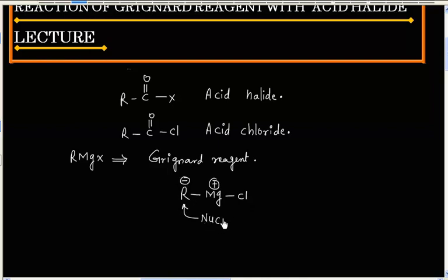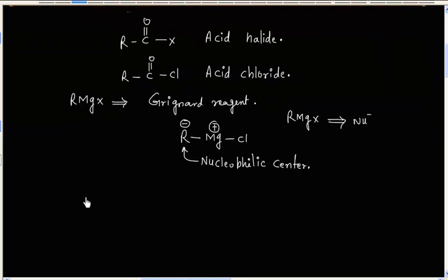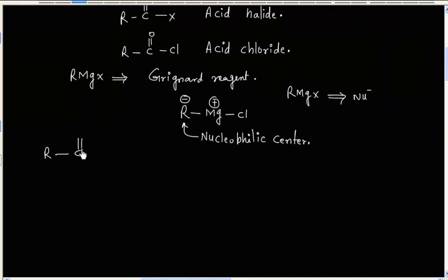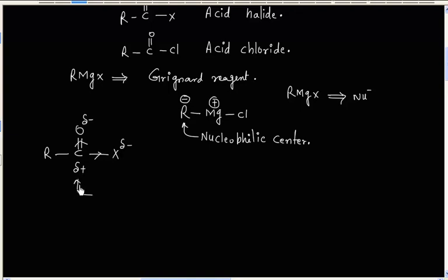Grignard reagent can act as a nucleophile. Now let us consider the formula for Acid Halide. Oxygen is more electronegative than Carbon, so this electron cloud is pulled towards Oxygen. Oxygen will have negative charge and Carbon will develop positive charge. Similarly, the Halogen X is also an electronegative atom, so the electron cloud is shifted towards X. X will develop a negative charge and Carbon will develop a positive charge. So basically, Carbon is the electrophilic center.